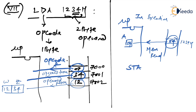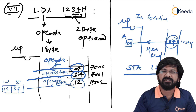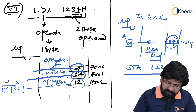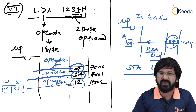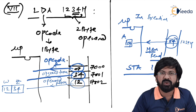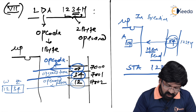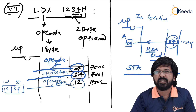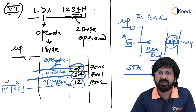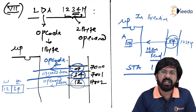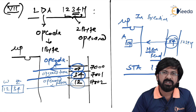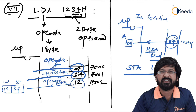STA 1234H is opposite to LDA — where LDA reads from memory, STA writes to memory. It is also a 3-byte instruction requiring opcode fetch, operand fetch, operand fetch for fetching. Since STA stores the accumulator content to memory location 1234H, it requires a memory write machine cycle instead of memory read. This is how we follow the steps for identifying machine cycles and respective T-states, which is very important for writing software delays. Thank you.